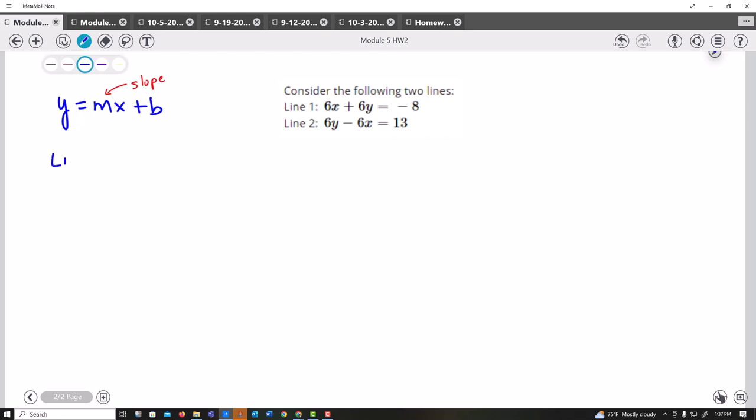So line 1, which is 6x plus 6y equals negative 8, I could subtract 6x from both sides because I am trying to get y all by itself. So I get 6y equals negative 6x minus 8. And then I could divide both sides by 6. And be sure you are dividing every term. They are not asking me to find this, but I just want to do it correctly. And so that would be negative 1x and then minus 8 over 6.